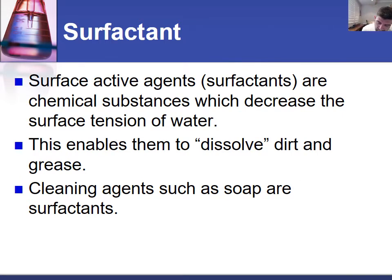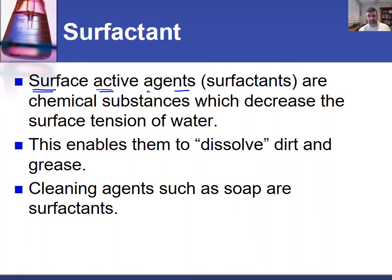The term surfactant comes from 'surface acting agents' — surfactant is really a contraction of that expression. These are chemical substances which can decrease the surface tension of water. In your preliminary course, you looked at surface tension as one of those quite interesting properties of water, almost allowing it to behave like the surface of a trampoline. Surface acting agents interact with that surface tension and decrease it, meaning there is more possibility for mixing of the water.